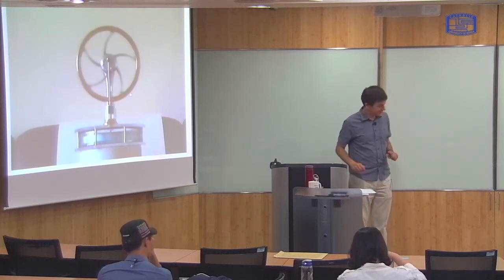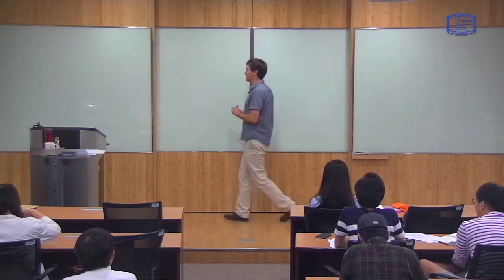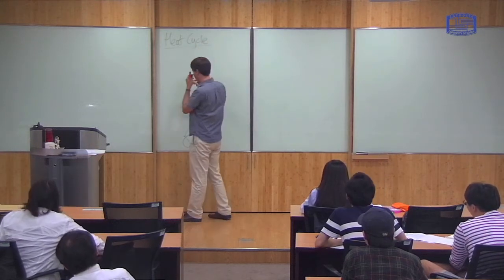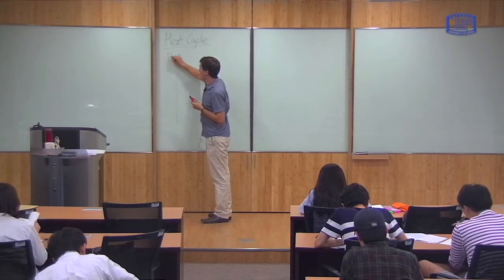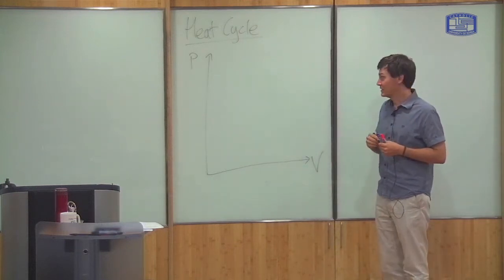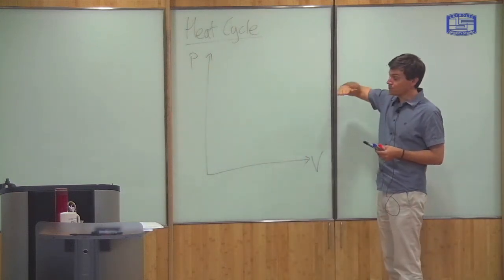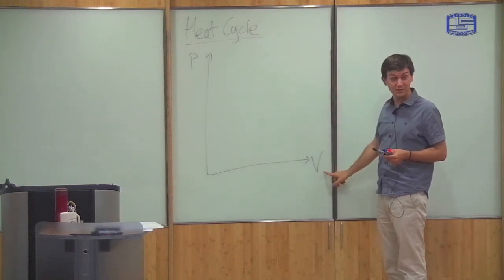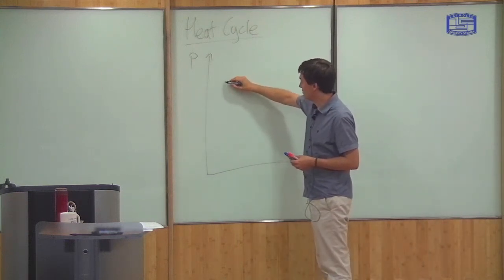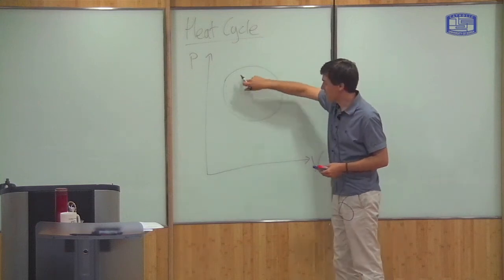This is an example of a heat cycle, which is the topic for the next couple of weeks. We can plot the behavior of this system on the pressure-volume diagram. As the gas temperature changes, the pressure is changing. And as the driving piston moves up and down, the volume is changing. So as the wheel goes around one revolution, the pressure and volume inside the gas change — something like this. It goes around in some sort of cycle.